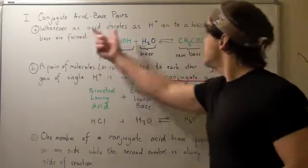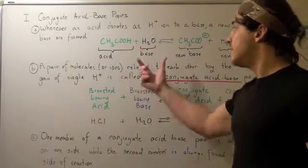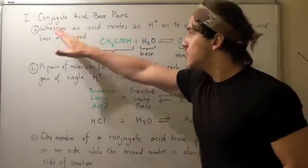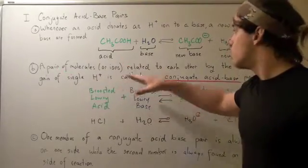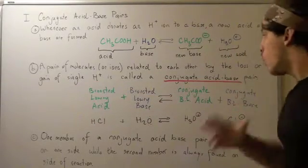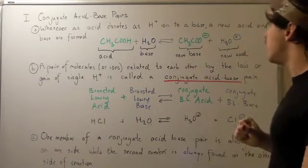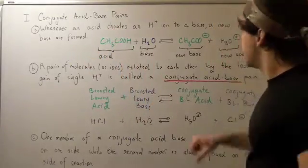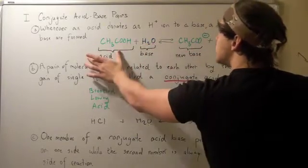This confirms that whenever an acid reacts with a base, a new base and a new acid are formed. A pair of molecules or ions related to each other by the loss or gain of a single H-plus ion are called conjugate acid-base pairs. So when an acid loses an H-ion and becomes a base, that acid and that base are a conjugate acid-base pair.